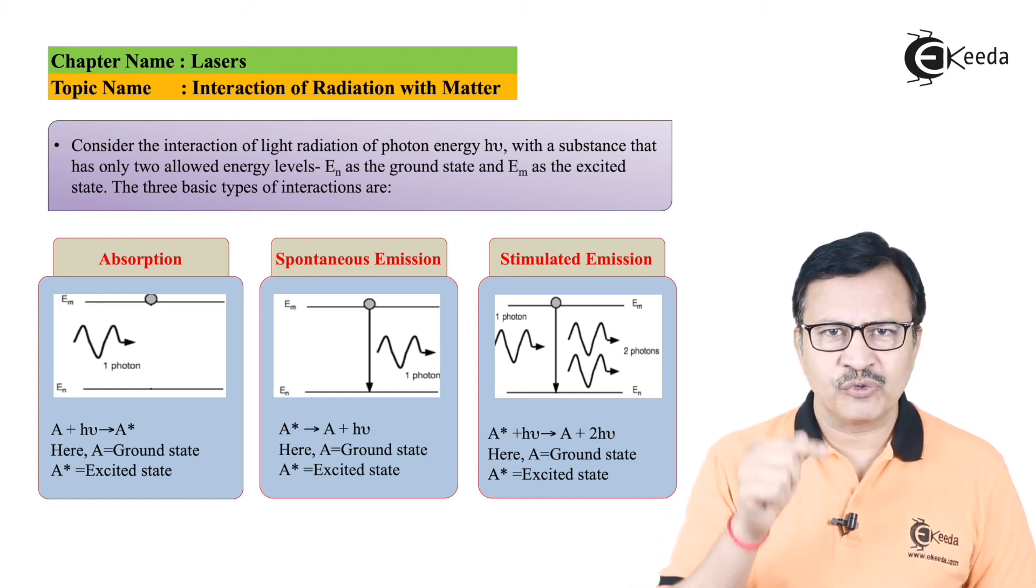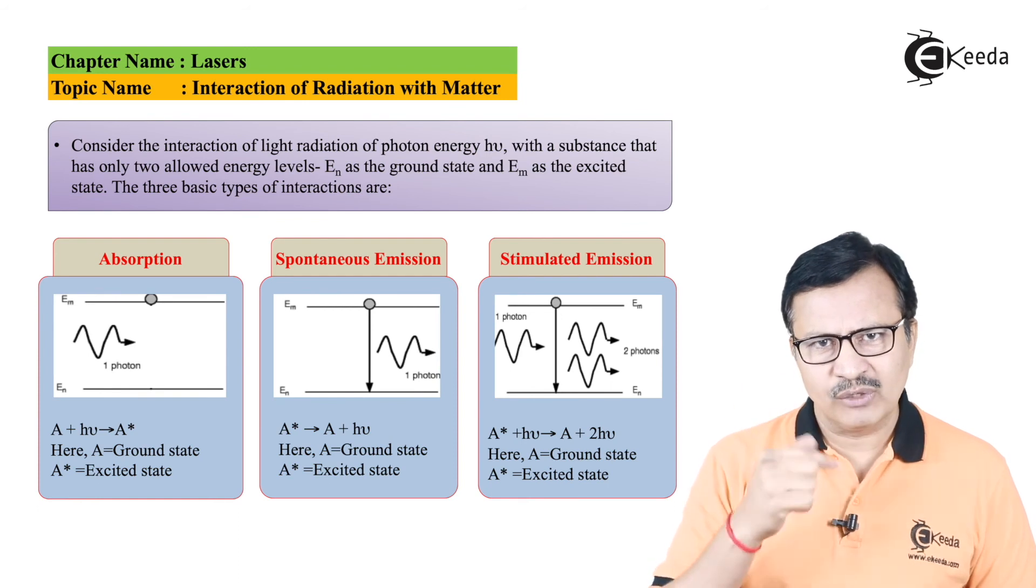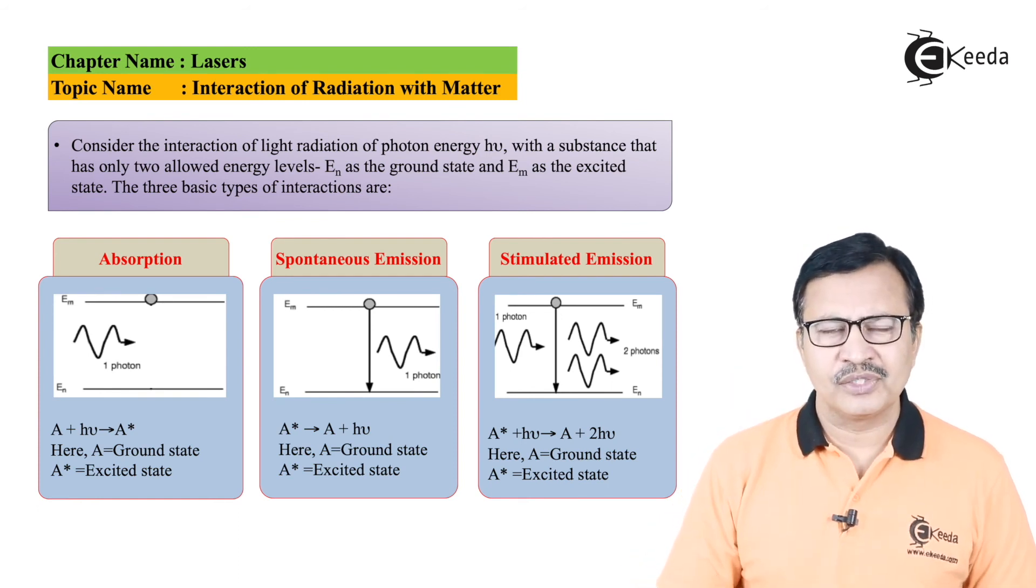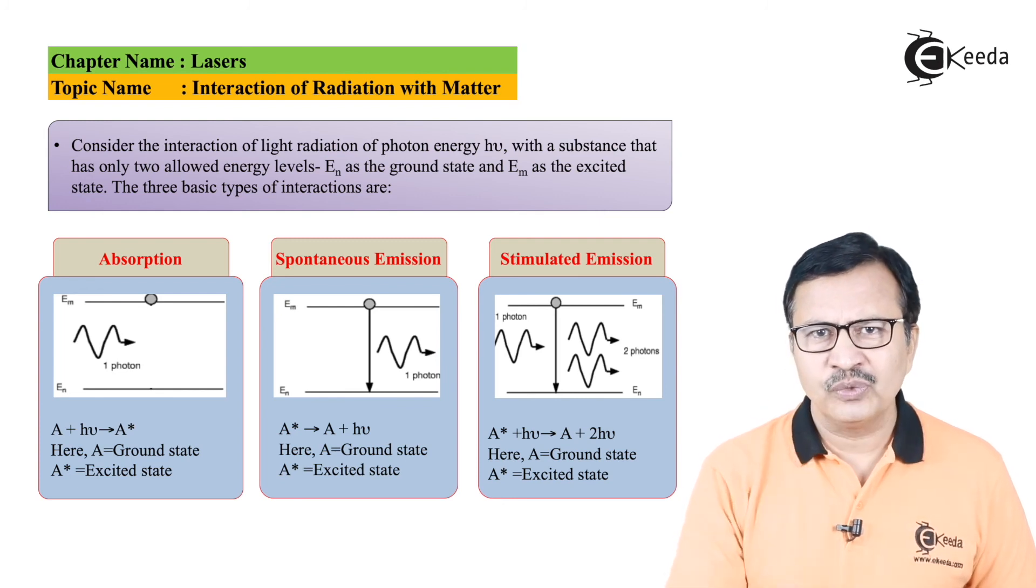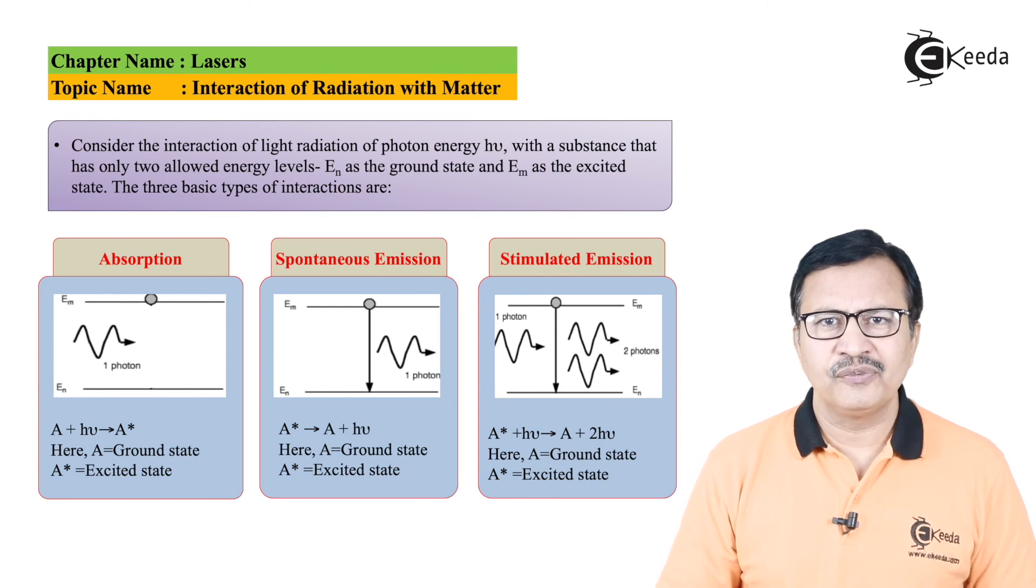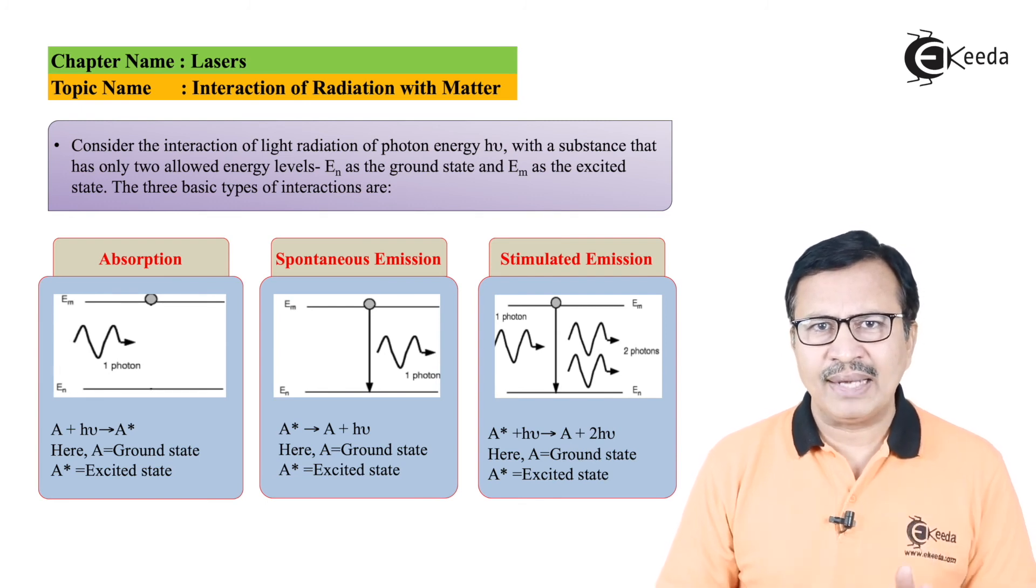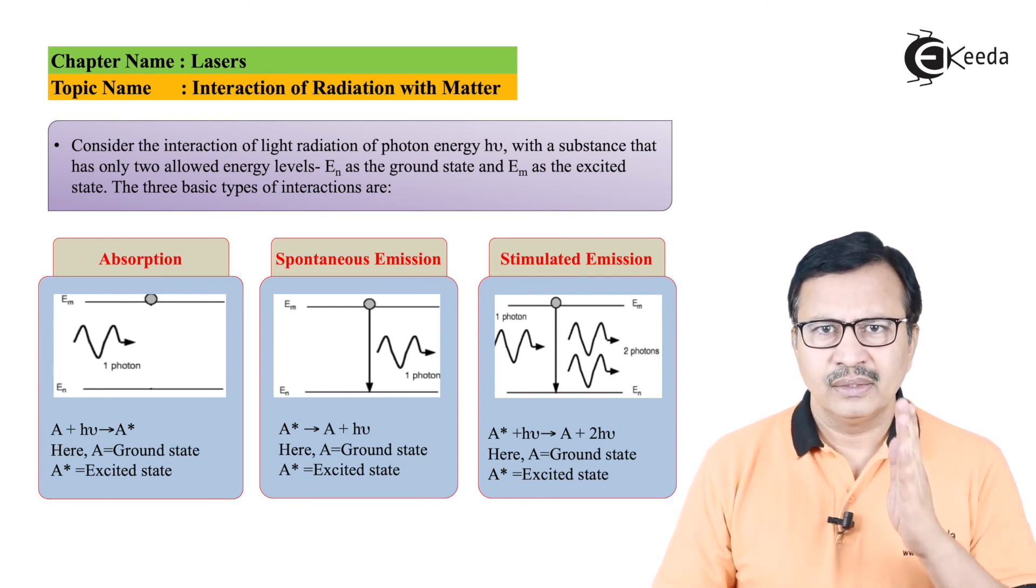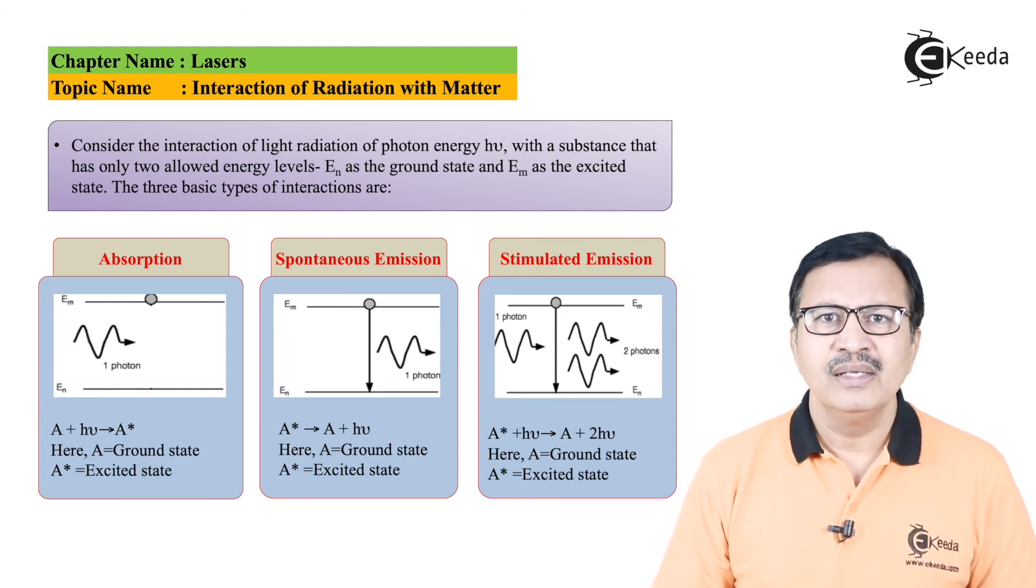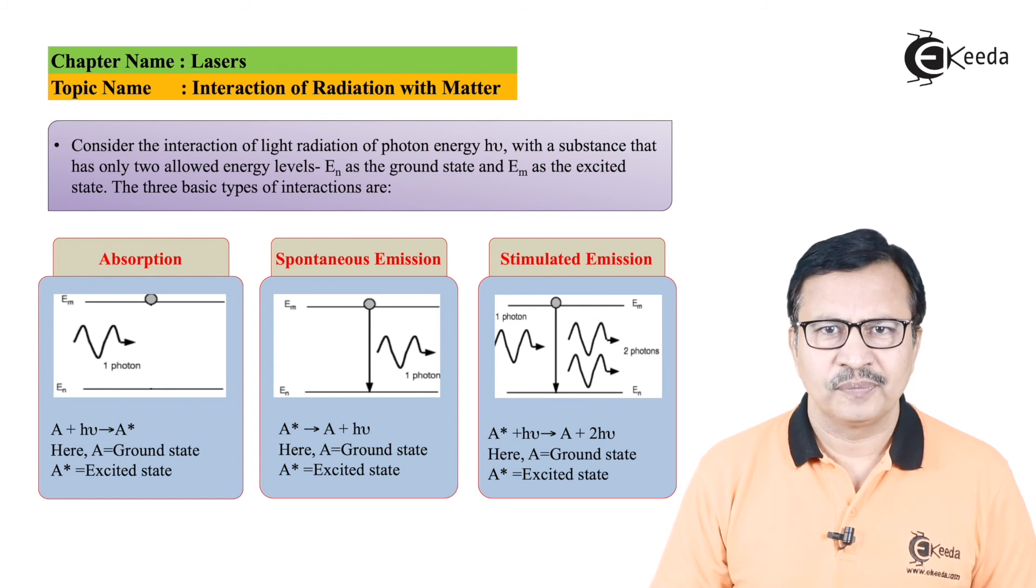The photon that is released from the transition as well as the photon that actually stimulated this particular transition. Hence there will be two hνs in this particular expression. So such a kind of interaction between matter and the photon or rather the radiation is called the stimulated emission interaction.